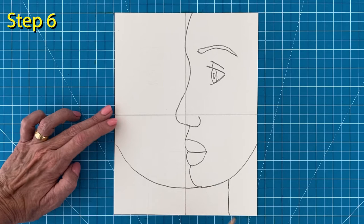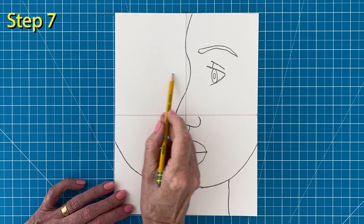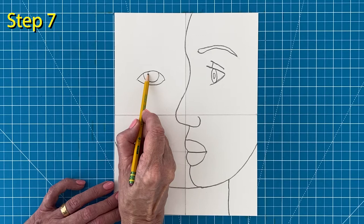Step number seven: Use the right eye to see where the left eye should be and draw the basic shape. Add the details inside, add an eyelid line above the eye, and then draw the left eyebrow.